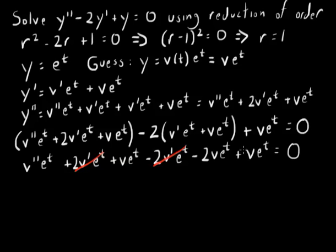Now I've got plus v, plus v, minus 2v. So all of those cancel. So, what are we left with? Well, we're left with v double prime e to the t equals 0.